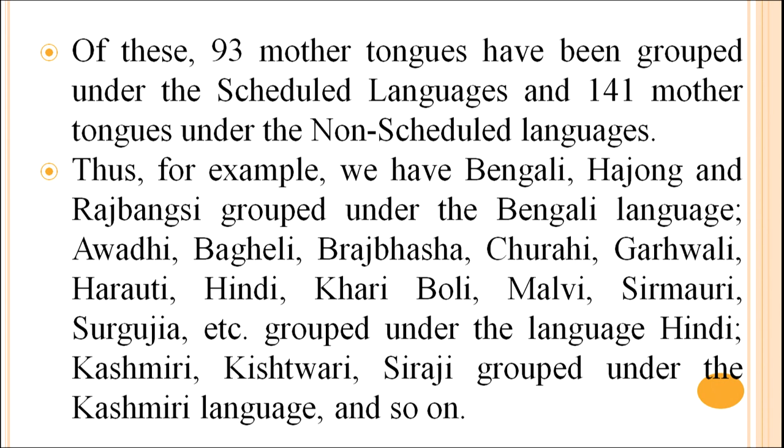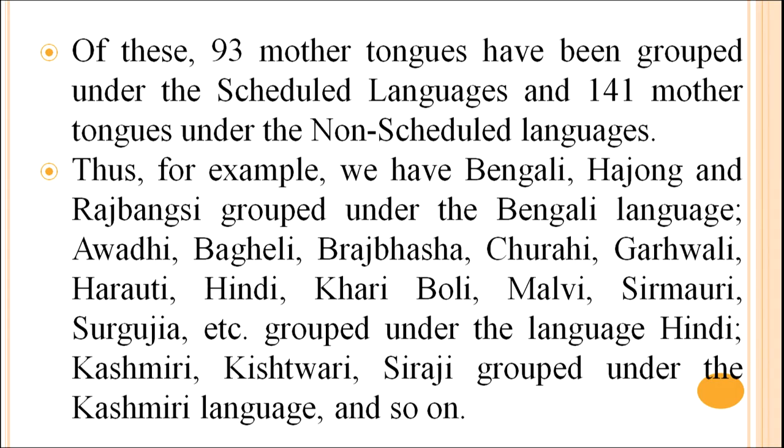Apart from scheduled languages, let us look at the mother tongues grouped under them. There are a total of 234 identifiable languages and mother tongues that returned 10,000 or more speakers each at the all-India level. Of these, 93 mother tongues have been grouped under the 22 scheduled languages, and 141 mother tongues under non-scheduled languages. For example, Bengali, Hajong, and Rajbanshi are grouped under Bengali. Avadhi, Bagheli, Brajbhasha, Churahi, Garhwali, Harauti, Hindi, Khariboli, Malvi, Sirmauri, Surajpuri, etc. are grouped under Hindi. Kashmiri, Kishtwari, and Siraji are grouped under Kashmiri, and so on.